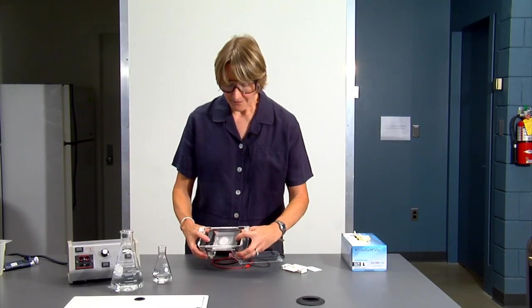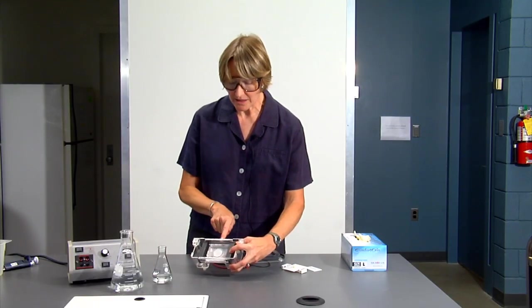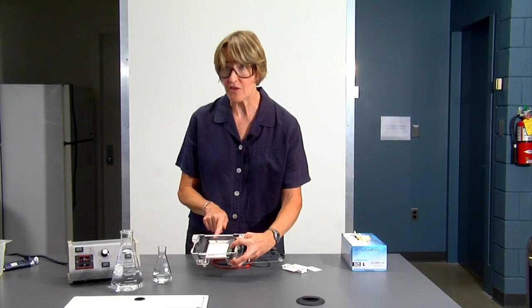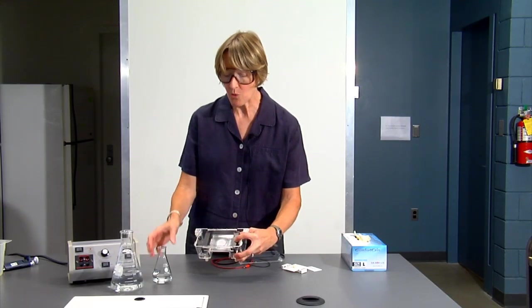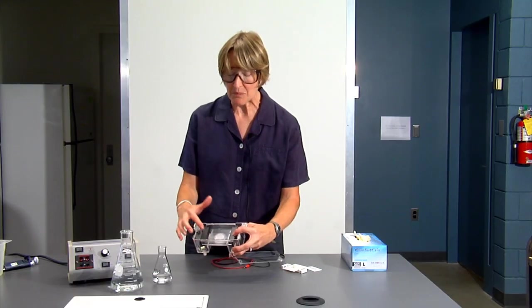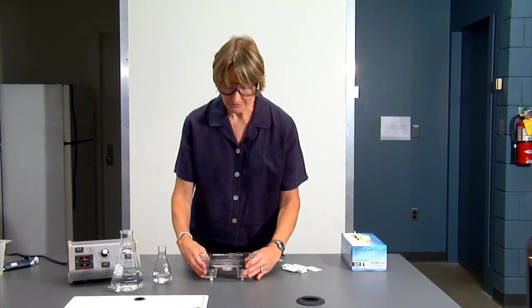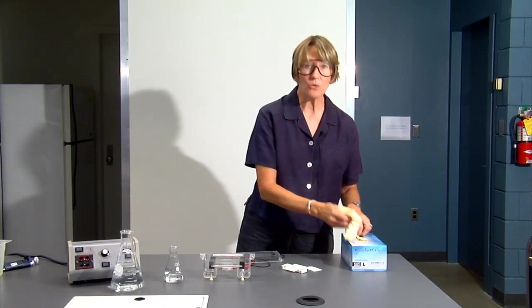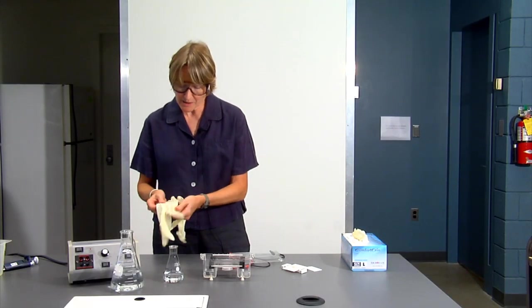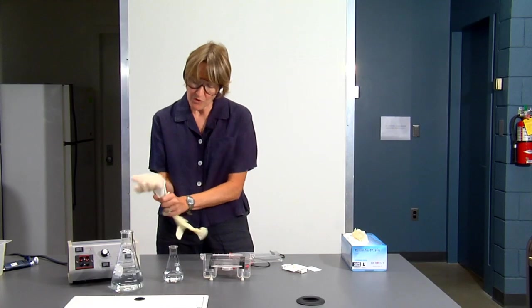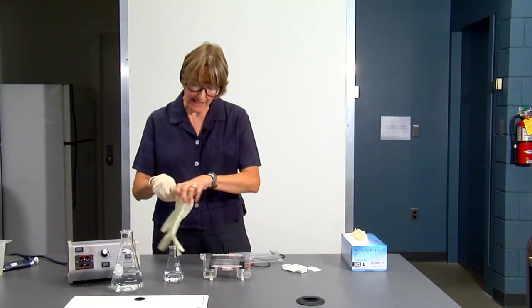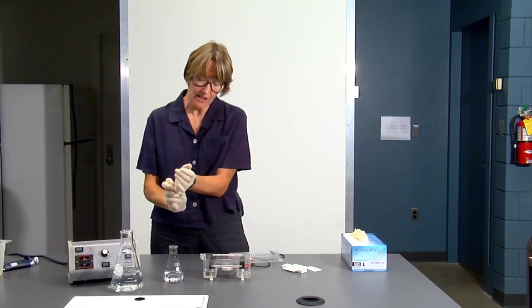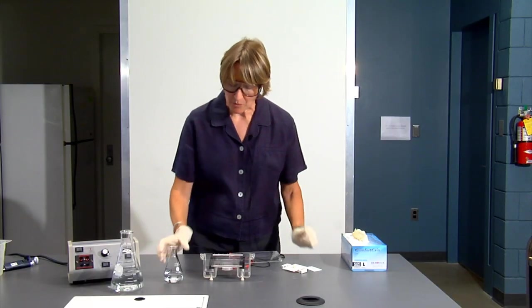On the gel tray, you should be able to see a little line. That is the pour line. You don't want to pour the gel any thicker than that. We'll take our agarose, and because we're using ethidium bromide, we're going to wear gloves. Ethidium bromide is a potential mutagen, and we've put it into the gel. It's used as a stain. It will bind to the DNA, and when we're done, we can view the DNA using ultraviolet light.